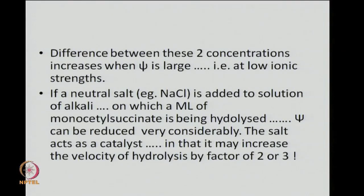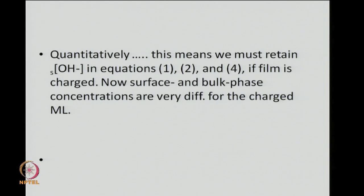Differences between surface and bulk concentrations increase when psi is large, that is at low ionic strength. Adding a neutral salt like NaCl to the solution of alkali on which a monolayer of monocetyl succinate is being hydrolyzed can reduce psi very considerably, meaning salt unexpectedly acts as a catalyst. It may increase the velocity of hydrolysis by a factor of 2 or 3. Quantitatively this means we must retain S_{OH⁻} in our equations rather than replacing it by B_{OH⁻}, since the surface and bulk phase concentrations are very different for charged monolayers, and every assumption has to be carefully weighed before taking the analysis further.